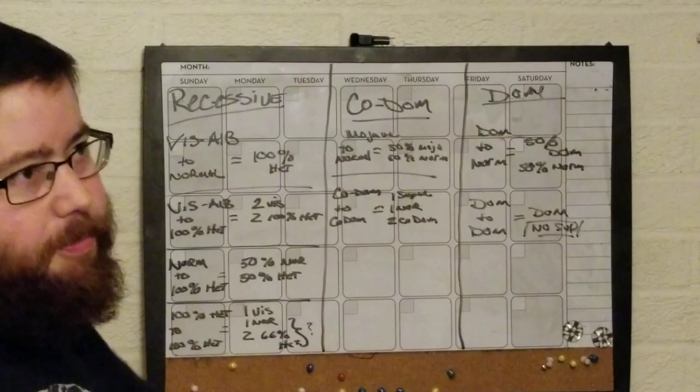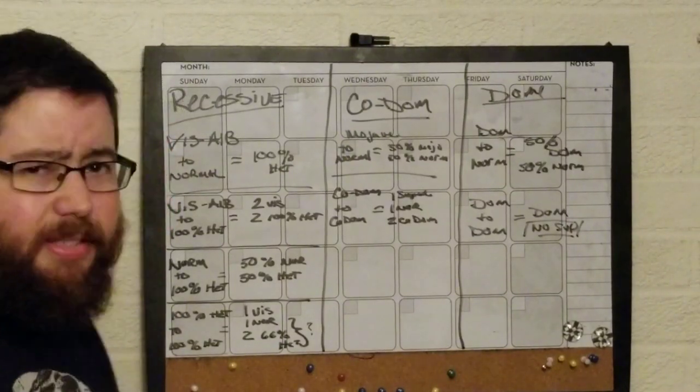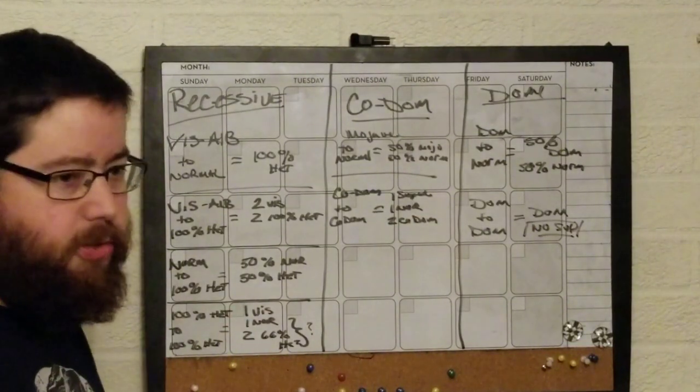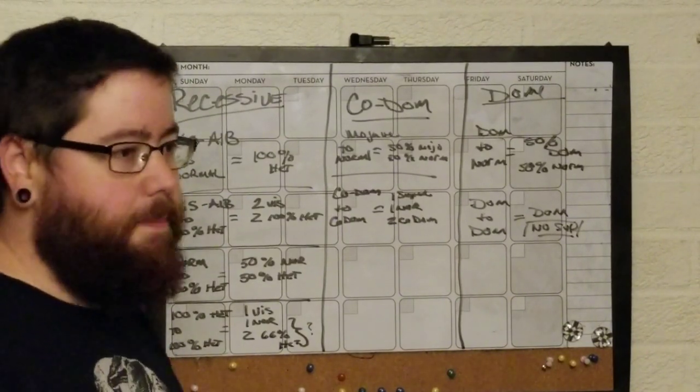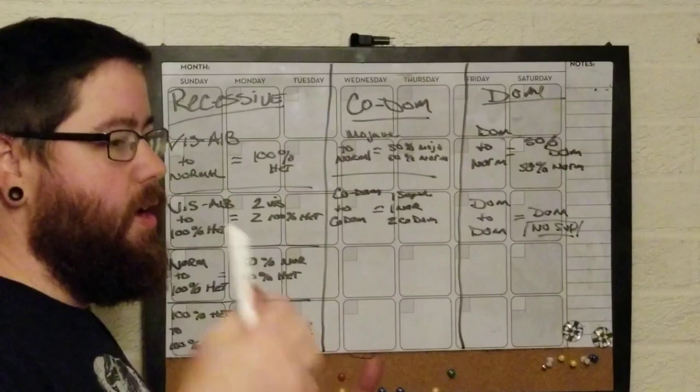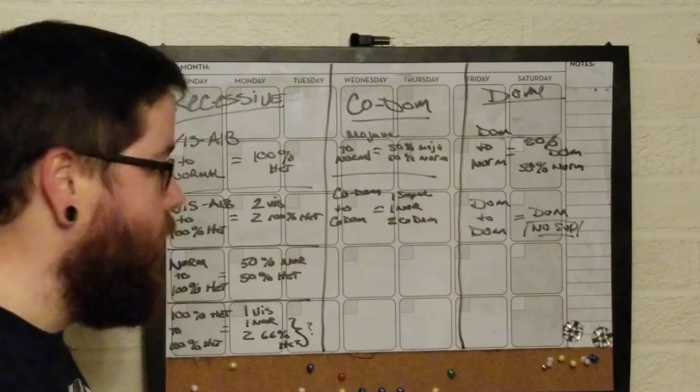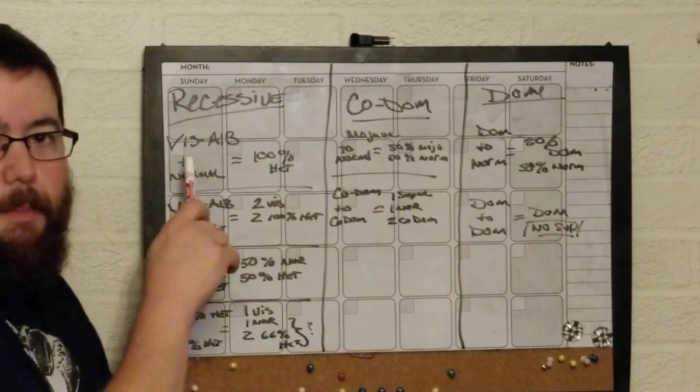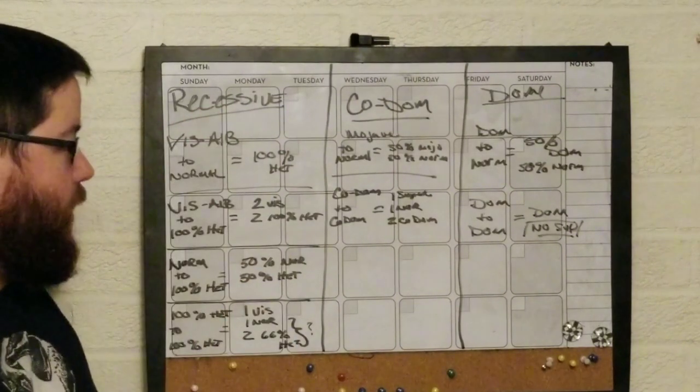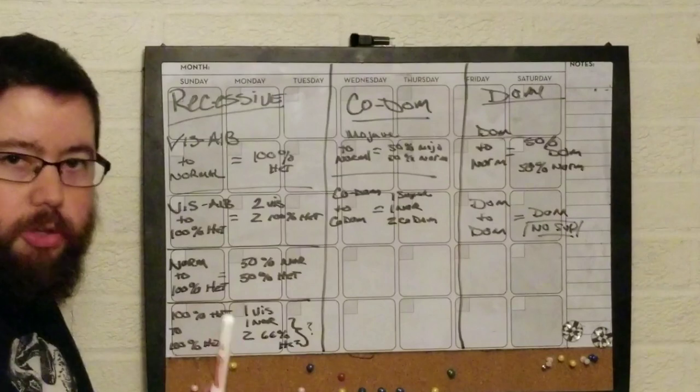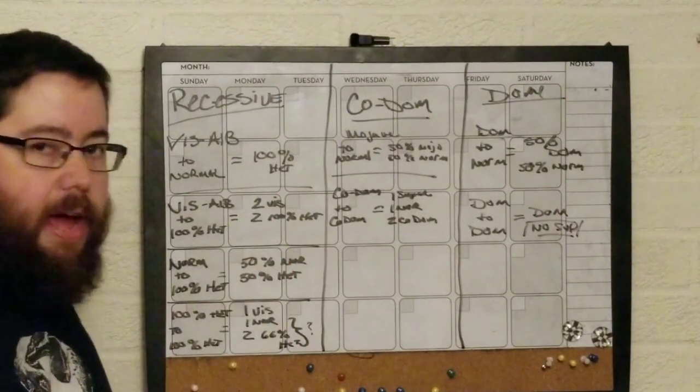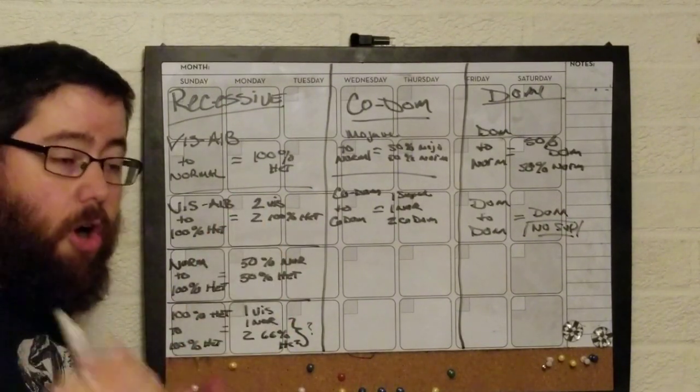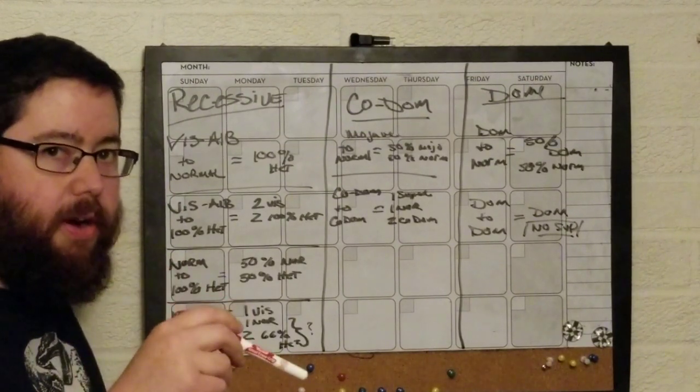We'll start with recessives because that's usually where most of the confusion comes in. Recessive genes like albino, clown, G-stripe - those are where you need both parents to give off one side of the gene to make it visual. So the way it works, we'll make it easy. If you were to take a visual albino to a normal ball python, just your regular normal wild type, 100% all the babies will be heterozygous for albino. What that means is they're all going to look normal, but they will all carry the albino gene.